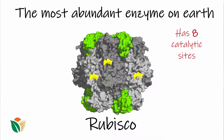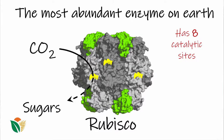Rubisco doesn't have just one catalytic site — it actually has eight for every molecule. What happens at each of these eight catalytic sites is that Rubisco initiates the conversion of carbon dioxide into sugars. As we know, sugars comprise carbon, hydrogen, and oxygen, so the carbon and oxygen in these sugars comes from the CO2 fixed by Rubisco, and the hydrogen actually comes from water.